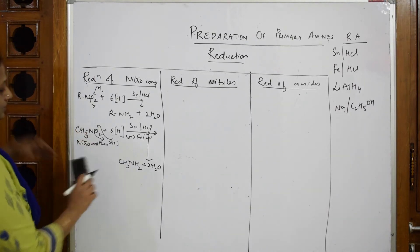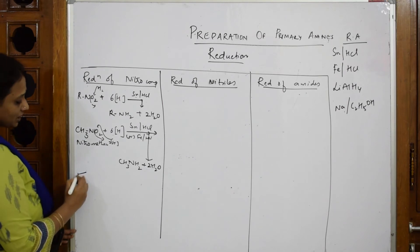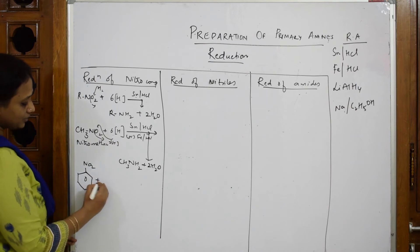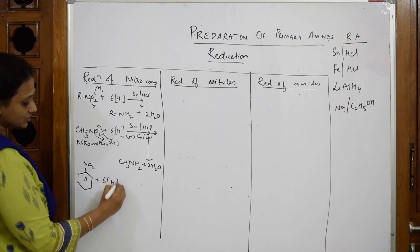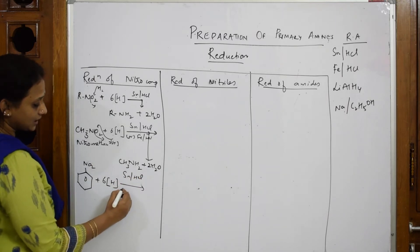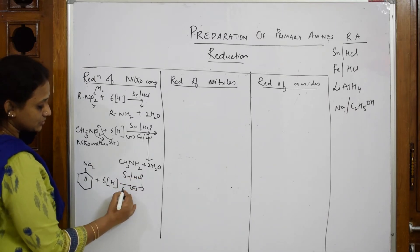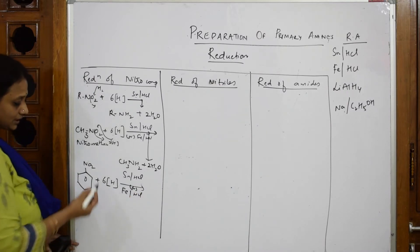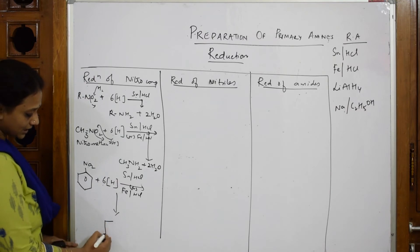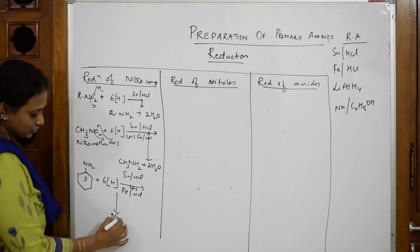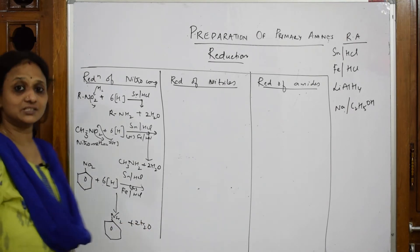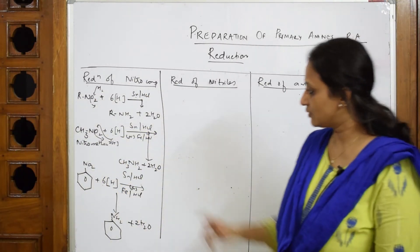For the aromatic example, take nitrobenzene. Add six hydrogens again using reducing agent HCl, or iron in the presence of HCl. Two hydrogens go to the nitrogen, giving aniline (benzene ring with NH₂), and the remaining four come out as two water molecules. This is how you prepare aniline from nitrobenzene using reducing agents.